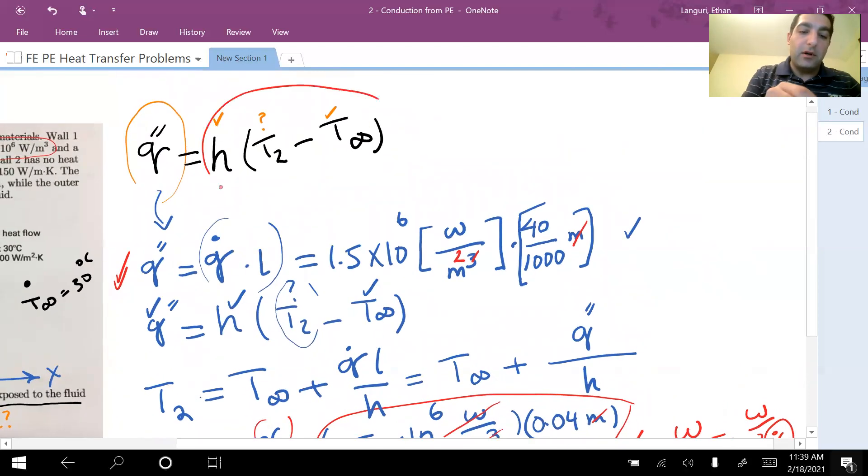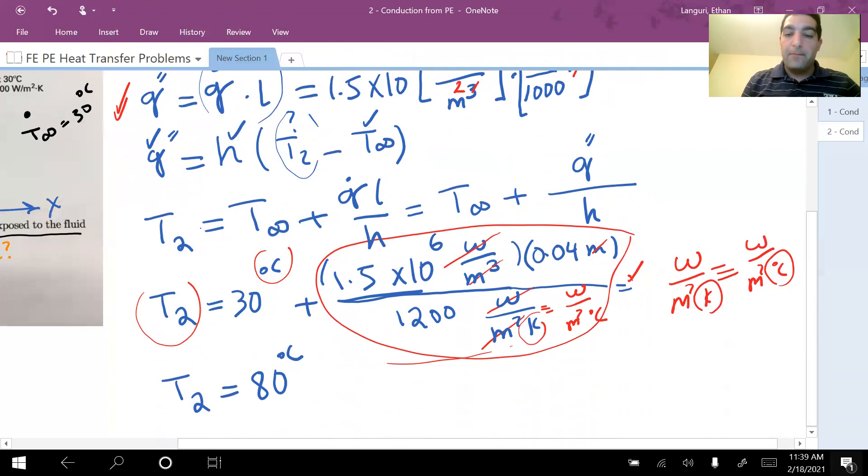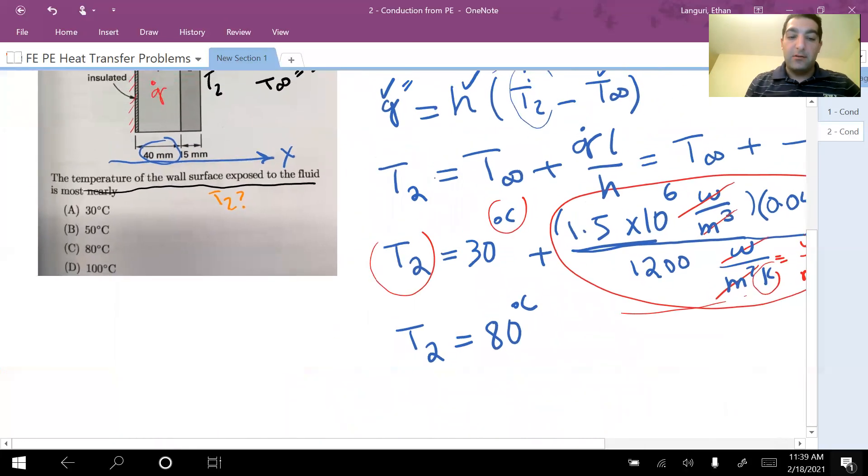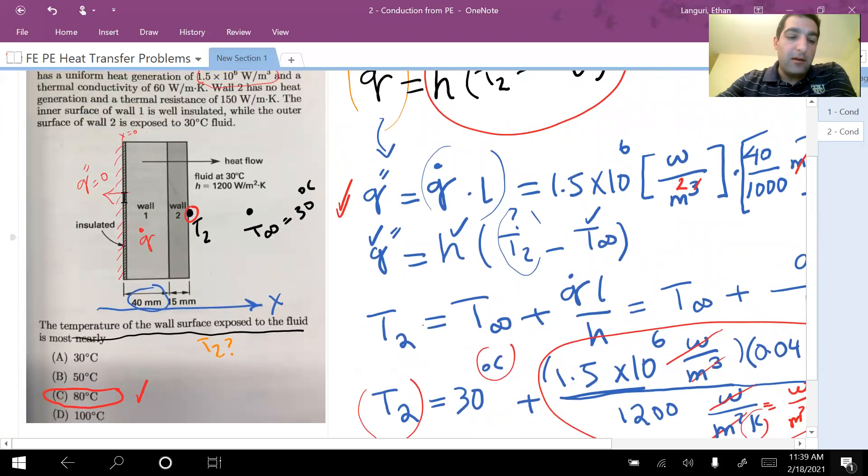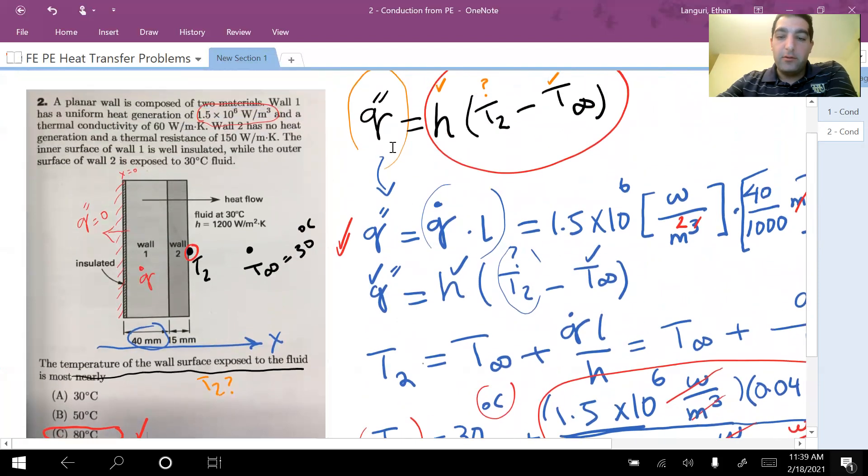So temperature found to be 80 degrees C. And you can see that answer C is the correct answer for this problem. So again, Newton's law of cooling and knowing the fact that insulated wall means that you do not have heat loss or heat gain through that wall, so all the heat should go to the fluid, is letting you know the amount of heat. And then of course you can use Newton's law of cooling to find the missing temperature information. Thank you.